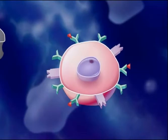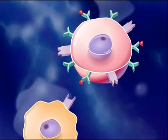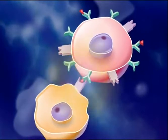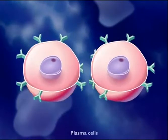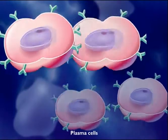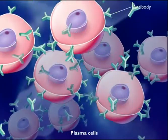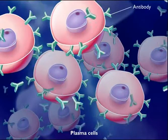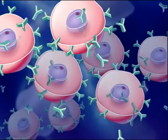B-cells also come in millions of different types, each able to recognize a particular antigen. When B-cells become activated by T-helper cells, they differentiate into plasma cells. These plasma cells become antibody-producing factories, flooding the bloodstream with antibodies that can bind to the antigen involved in this infection.